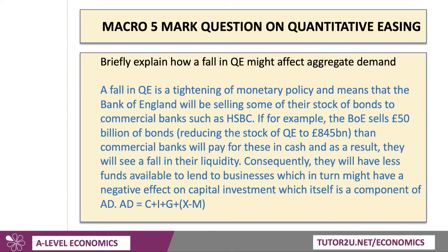If, for example, the Bank of England sells £50 billion of bonds, reducing the stock of QE to 845 billion, then commercial banks will pay for these in cash, and as a result, they will see a fall in their liquidity.